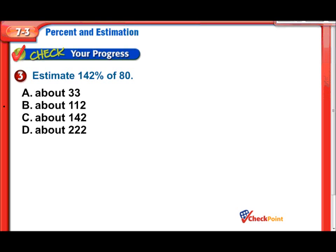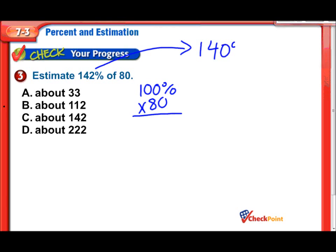Estimate 142% of 80. This is an interesting one. My approach: first find 100% of 80, then find the remaining percent. Let's round 142% to 140%. So I'll compute 100% of 80, then 40% of 80 — because 100 plus 40 equals 140%.